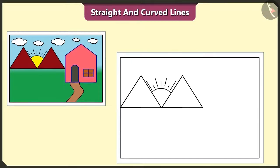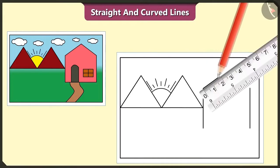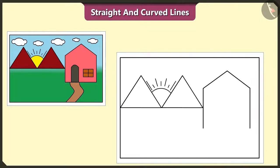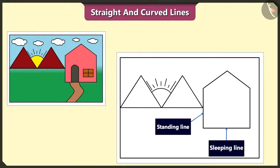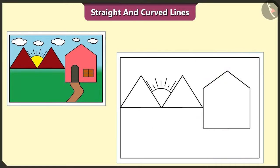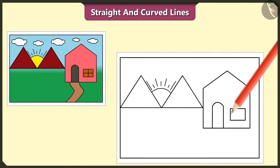Let's draw a house using both straight and curved lines. First of all, we have to draw two straight lines like this. Let's draw two more straight lines above these, and one more straight line at the base. The standing line, the sleeping line and the slanting lines are all straight lines. We forgot to draw the door and the window. Let's draw a door using two straight lines and one curved line, and draw this window using six straight lines.